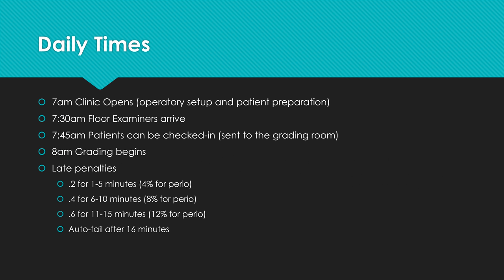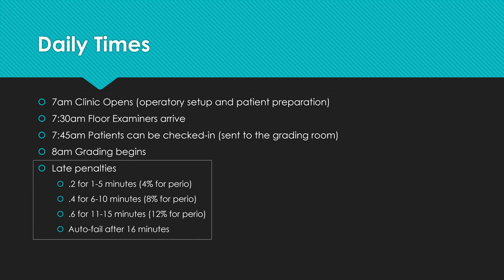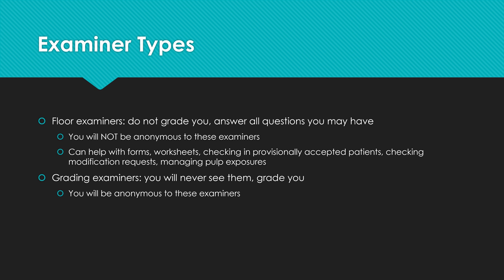For the daily schedule: 7am the clinic opens for setup; 7:30 floor examiners arrive; 7:45 patients can be checked in and sent to the grading room, but grading begins at 8am. Late penalties: 1–5 minutes late costs 0.2 points for operative or 4% for perio; 6–10 minutes is 0.4 points or 8%; 11–15 minutes is 0.6 points or 12%; after 16 minutes you fail that exam. Be on time.